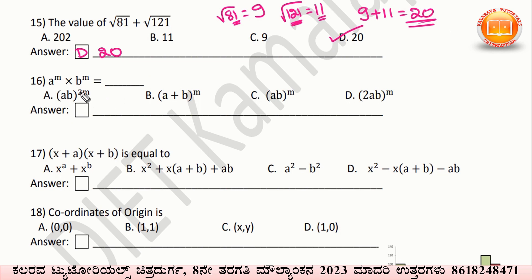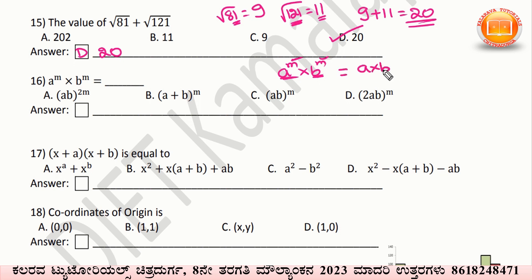The 16th question: aᵐ into bᵐ. This is the law of indices. When we write aᵐ into bᵐ, the bases are different but the powers are the same. So we can write this as (a×b) to the power m — that is (ab)ᵐ. Option C — (ab)ᵐ — is the correct answer.